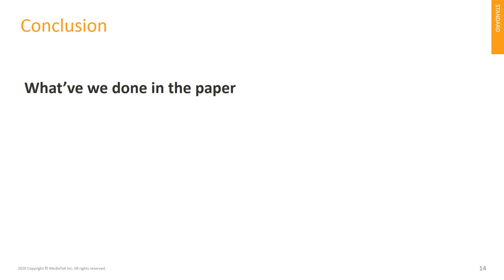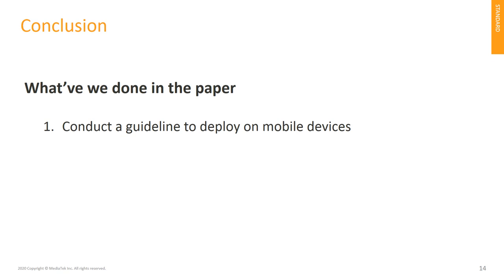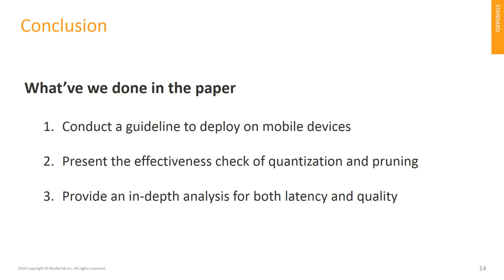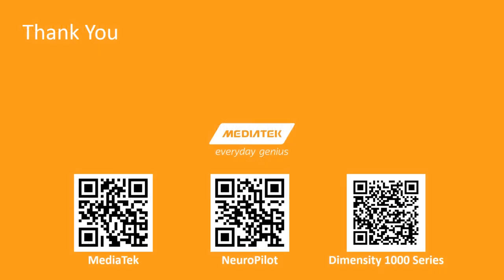At the end, I will recall what we have done in this paper. First, we conducted a search of portable network architecture for better quality and latency trade-off. Second, we presented the effectiveness of quantization and pruning for image denoising deployment. Third, we also provide in-depth analysis for both latency and image quality across mobile devices. Thank you all for listening to our talk. You can learn more about MediaTek, our NeuralPilot SDK, and the Dimensity 1000 chipset from the linked QR code. Thank you.